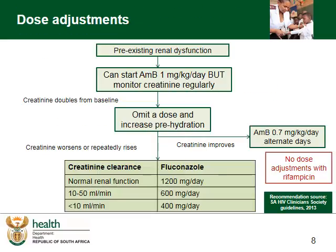The HIV Clinical Society guideline gives us a useful algorithm for approaching patients with pre-existing renal dysfunction, and can also be used in patients with increased creatinines. If the serum creatinine doubles from baseline, one dose of Amphotericin B may be omitted and pre-hydration must be increased to 1 liter of normal saline 8-hourly. Serum creatinine should then be monitored daily.